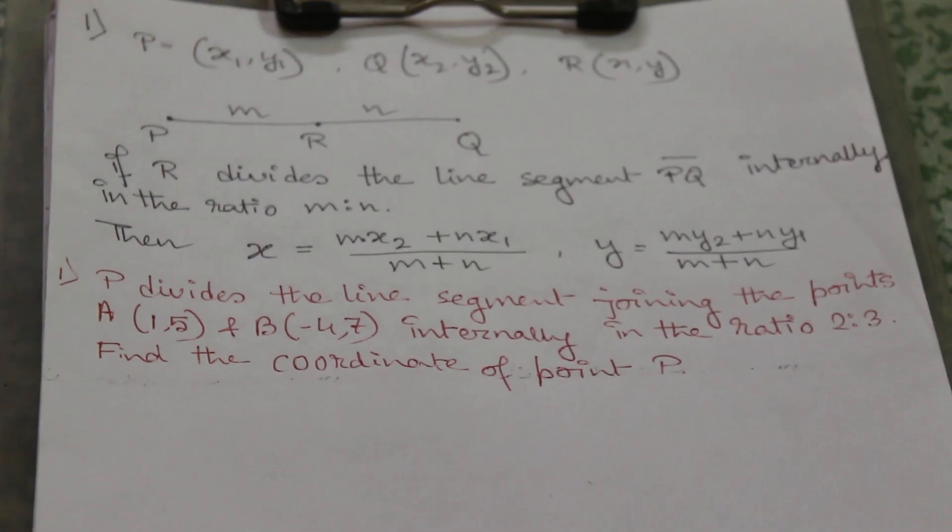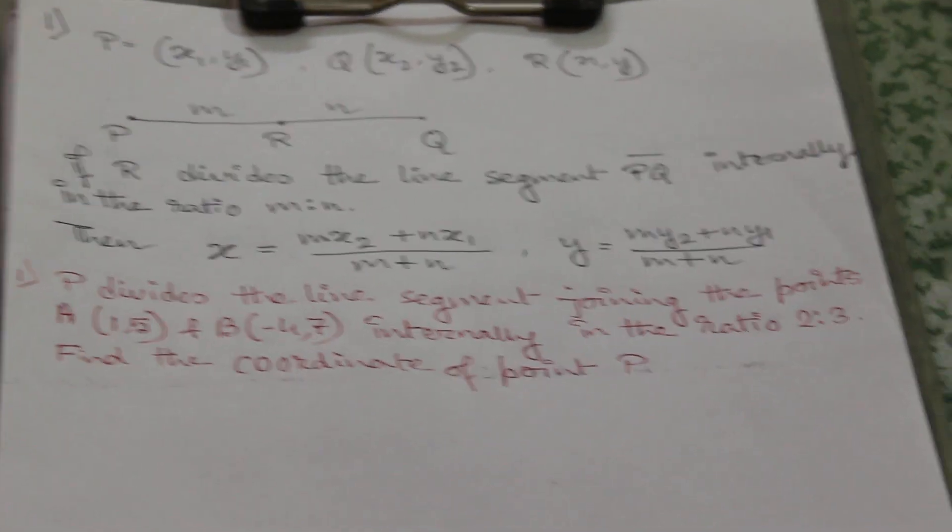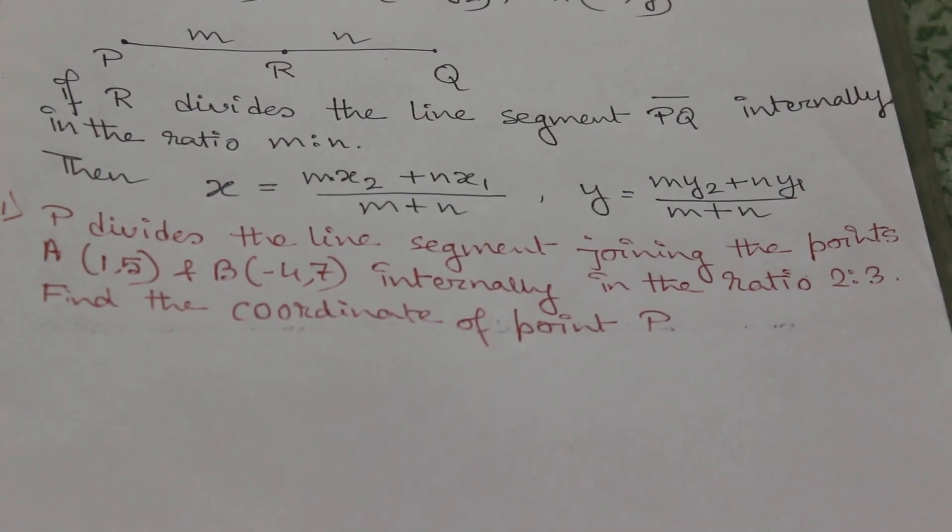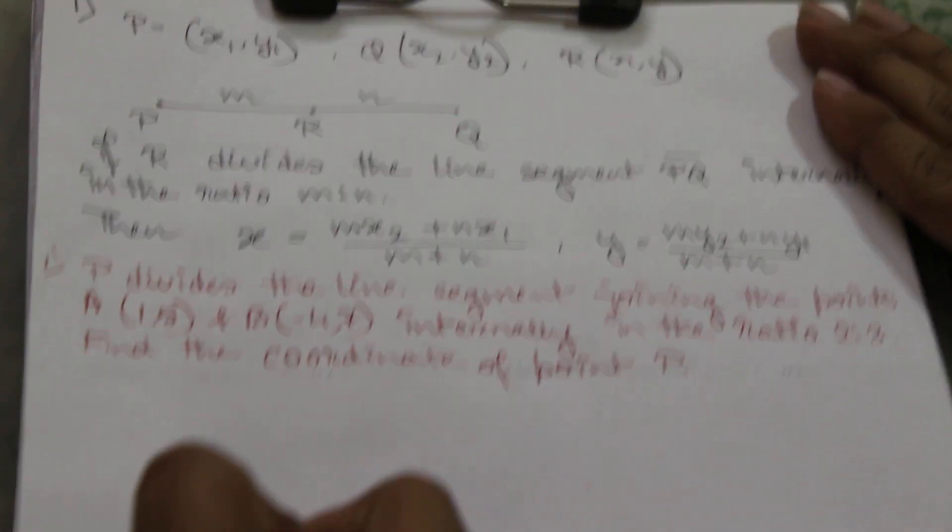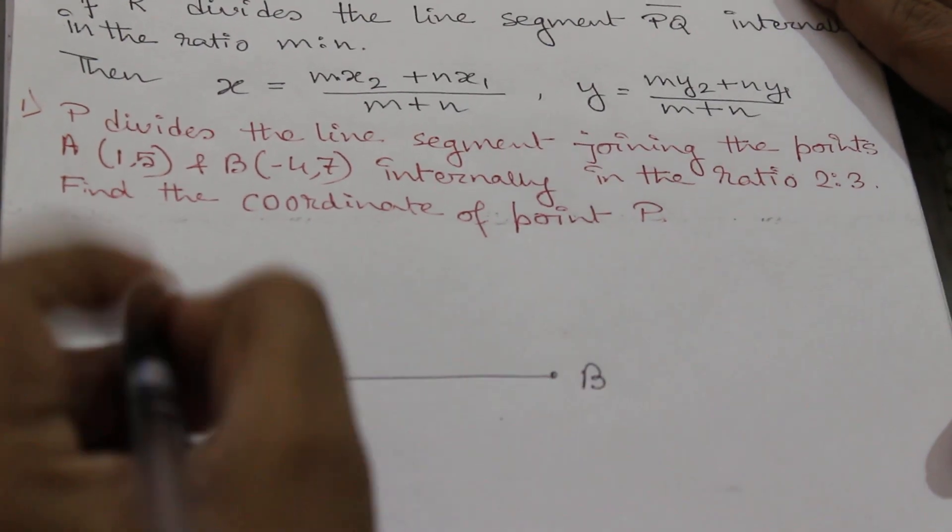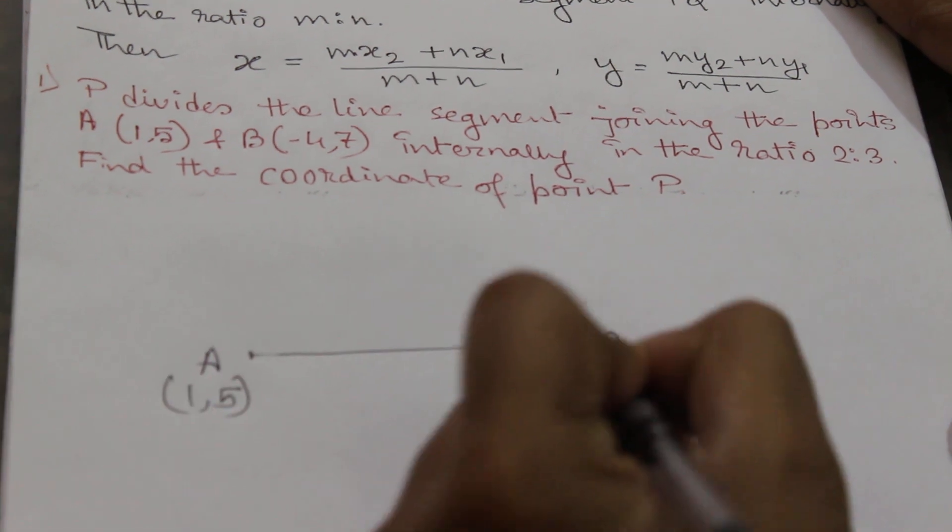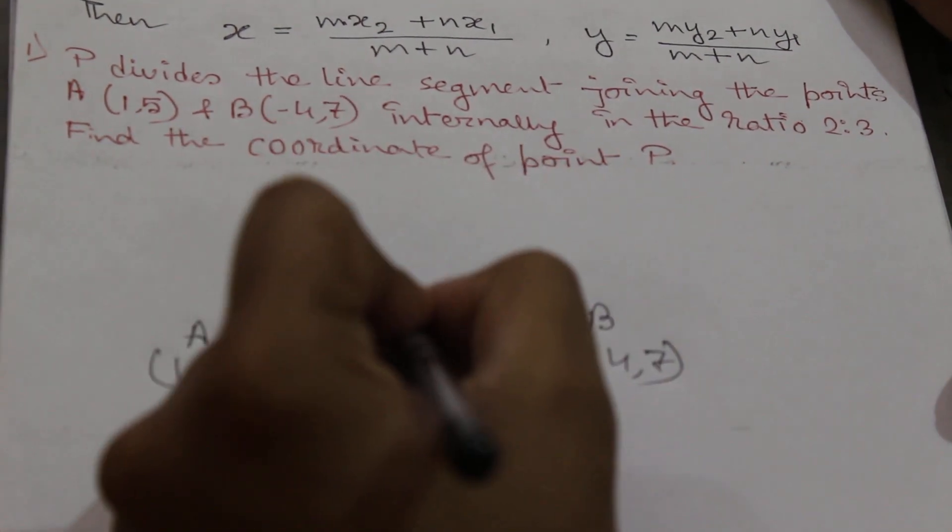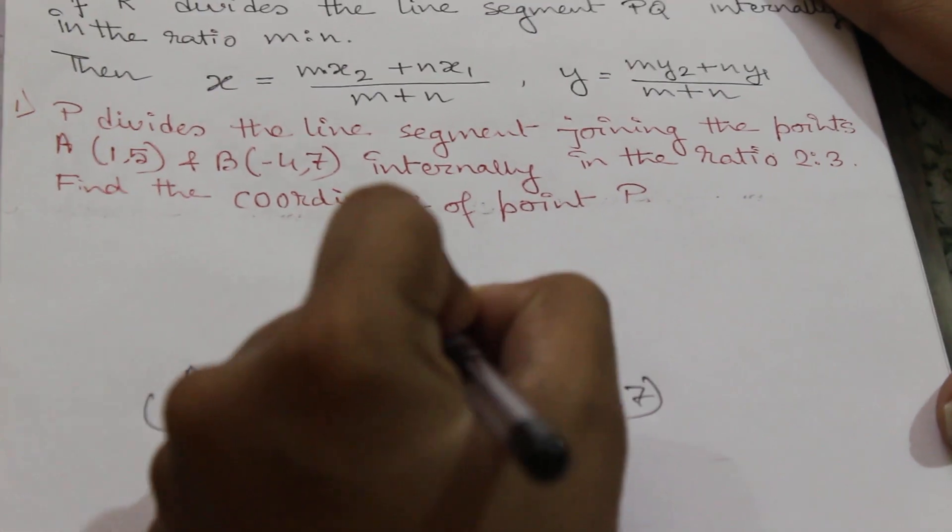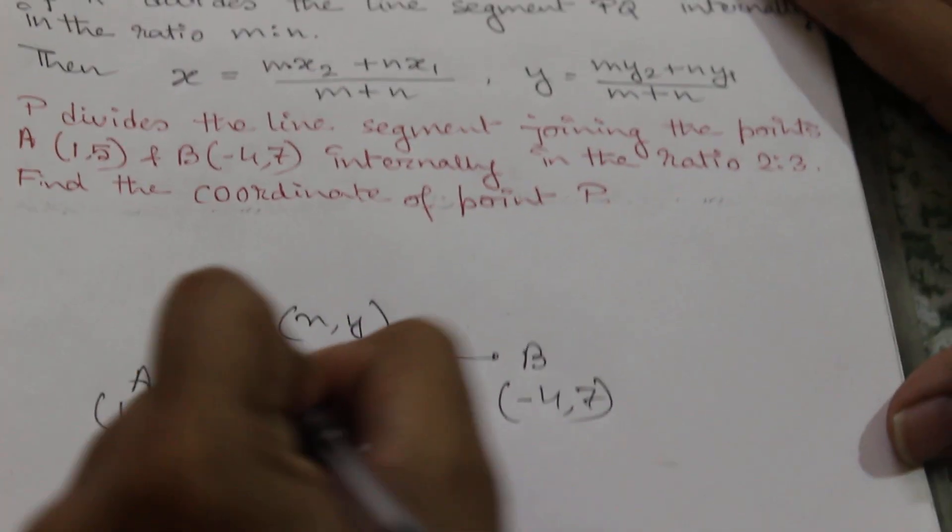P divides the line segment joining the points (1,5) and (-4,7) internally in the ratio 2:3. Find the coordinate of point P. First we will draw: this is A, this is B. A is (1,5), B is (-4,7). Now in between them there is one point P which is (x,y) which divides the line segment in 2:3 ratio.